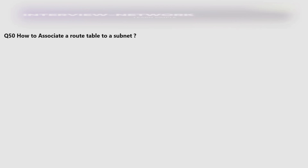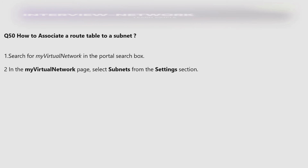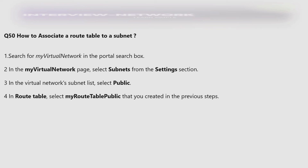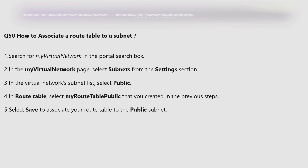How to associate a route table to a subnet? Search for your virtual network in the portal search box. In the virtual network page, select 'Subnets' from the settings section. In the virtual network subnet list, select 'Public.' In 'Route Table,' select the route table you created in the previous steps, then select 'Save' to associate your route table to the public subnet.